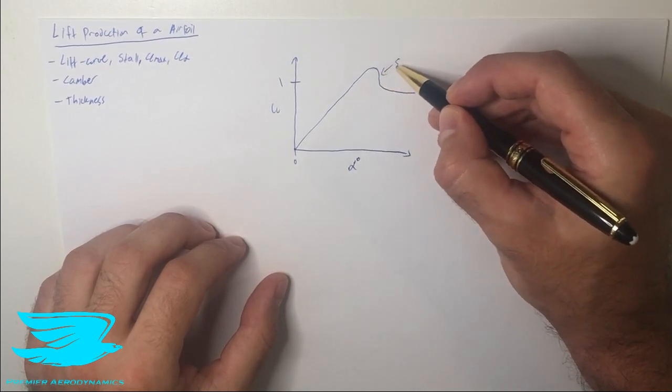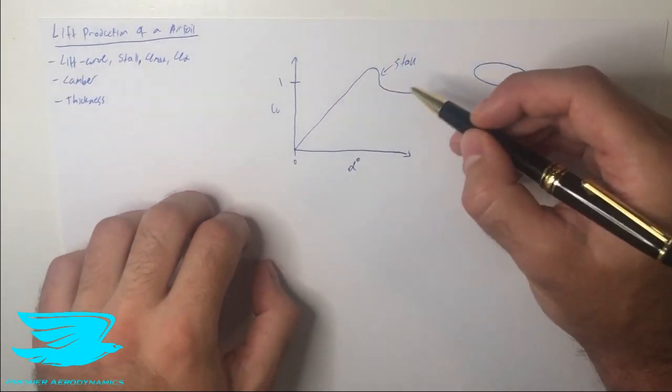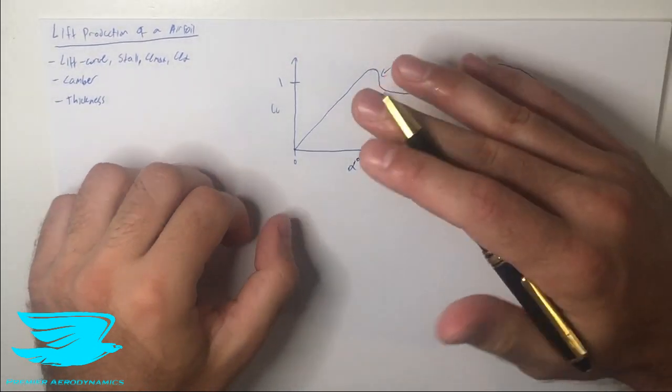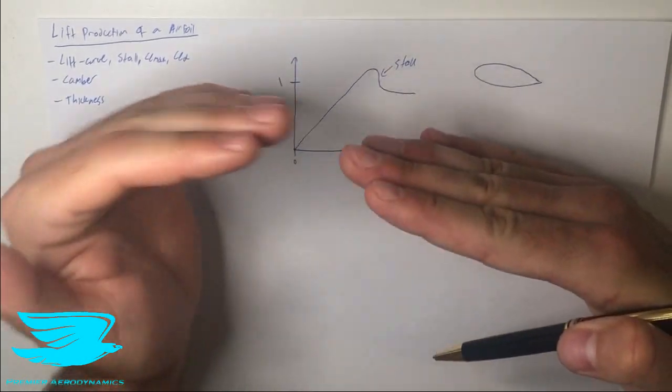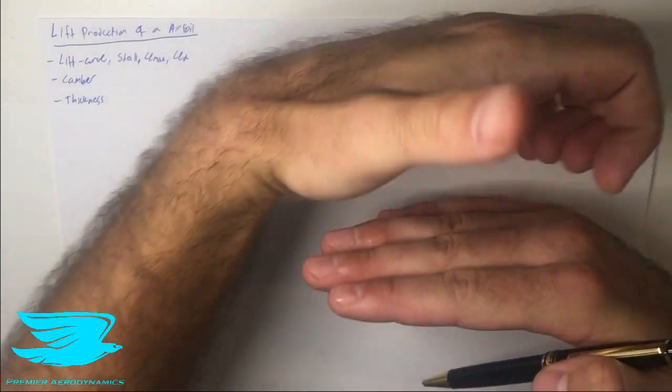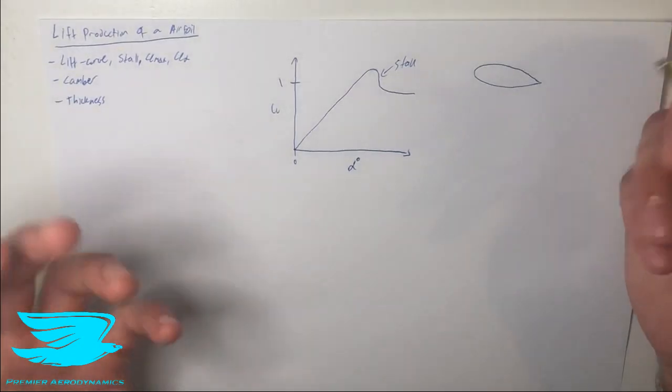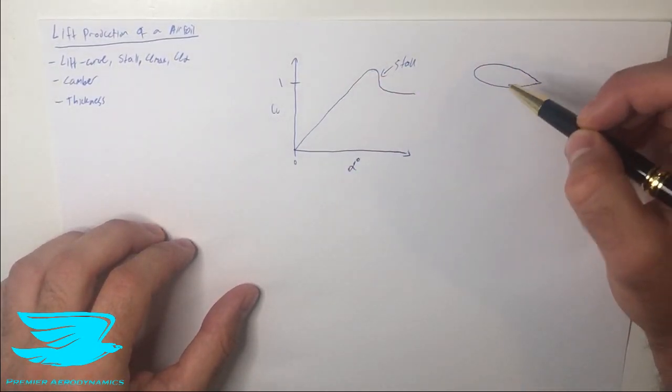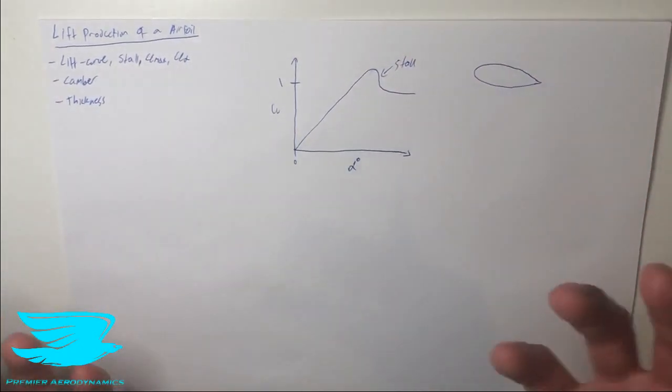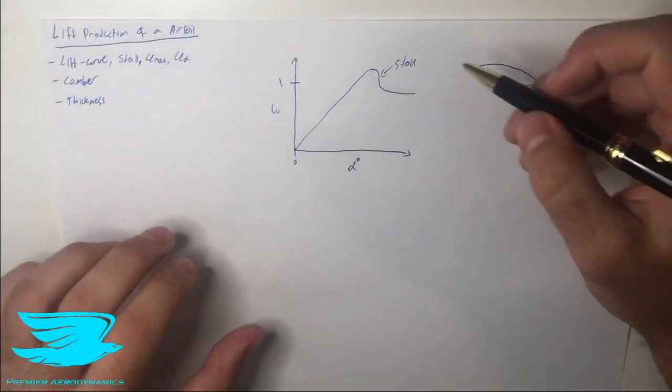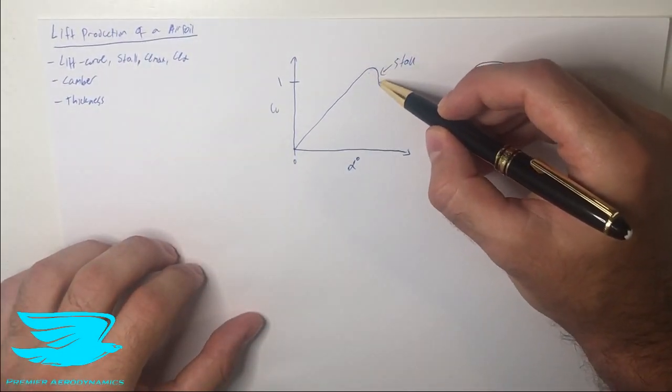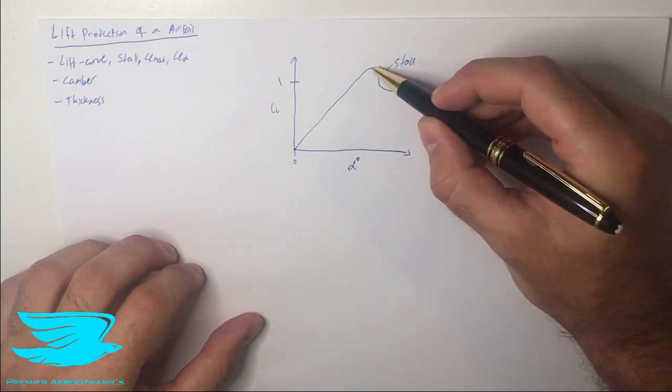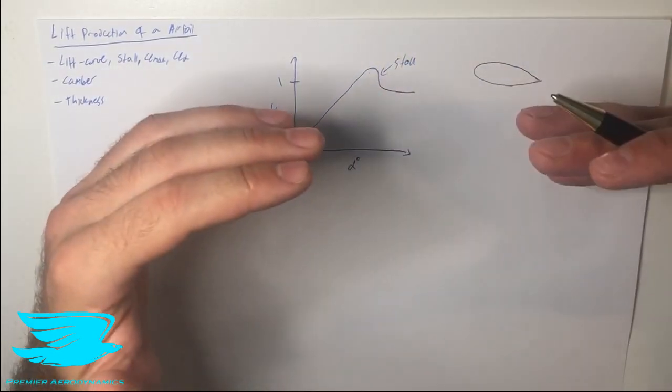This is the stall area. What happens is as we get to a certain angle of attack, the angle of attack is quite steep so the flow comes over and we start to separate over the airfoil and then we start to lose lift. Now notice that we don't lose all of the lift that the airfoil is producing, we only lose some of it. Often it's like 20-50% around that range and it can be very severe.